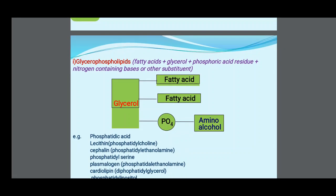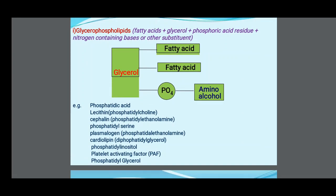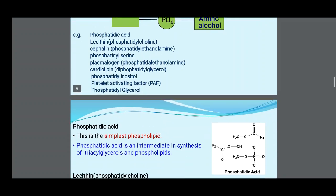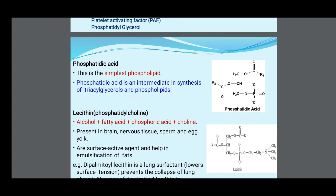Examples of glycerophospholipids include: phosphatidic acid, lecithin, cephalin, phosphatidylserine, plasmalogen, cardiolipin, phosphatidylinositol, platelet-activating factor, and phosphatidylglycerol. Phosphatidic acid is the simplest phospholipid and is an intermediate in the synthesis of triglycerides and phospholipids.